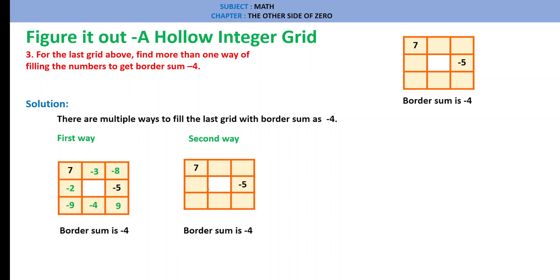Second way: Top row: 7, minus 14, plus 3 = minus 4. Bottom row: minus 17, plus 15, minus 2 = minus 4. Left column: 7, plus 6, minus 17 = minus 4. Right column: plus 3, minus 5, minus 2 = minus 4.